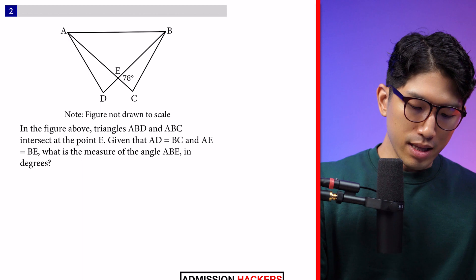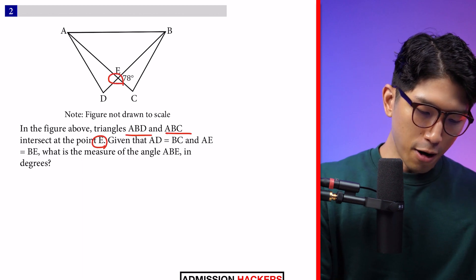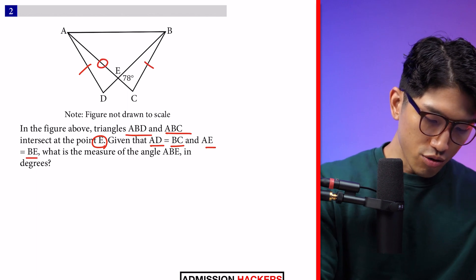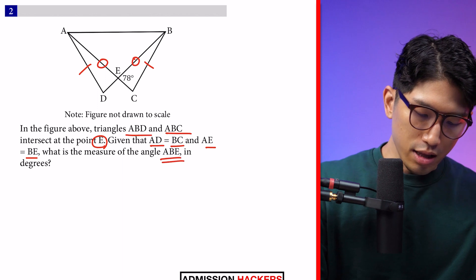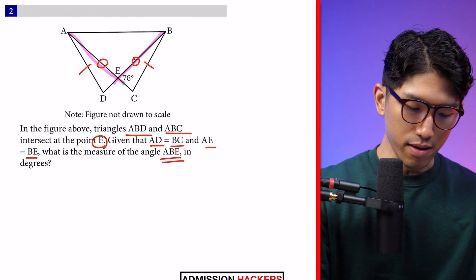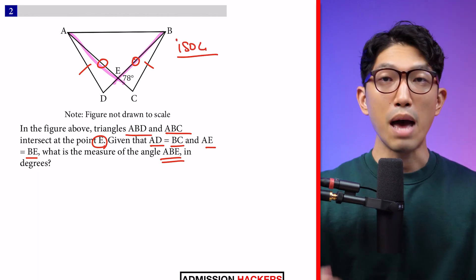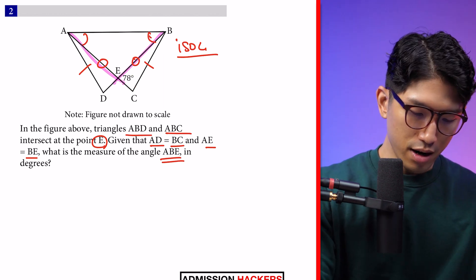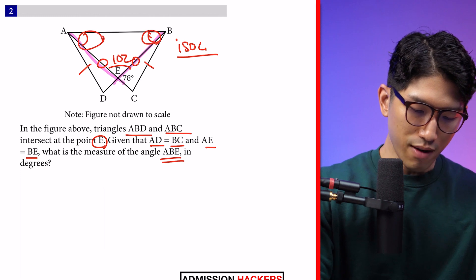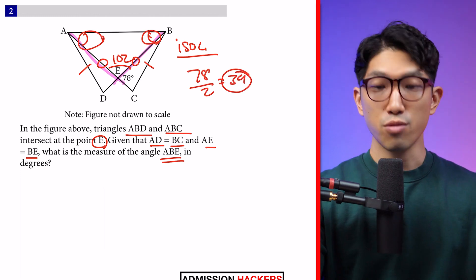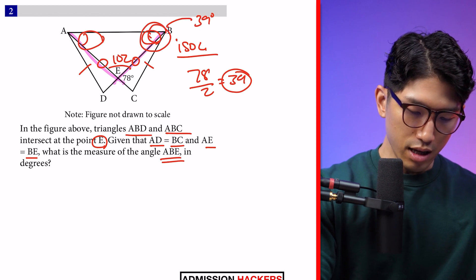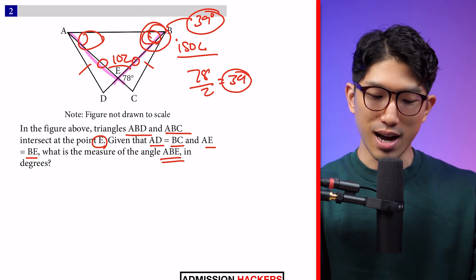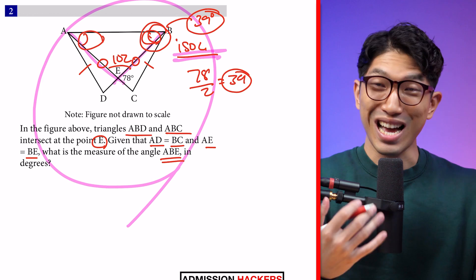Let's move on to the next one. The question says: In the figure above, triangles ABD and ABC intersect at point E. Given that AD equals BC and AE equals BE, what's the measure of angle ABE in degrees? If we're working with a triangle that has two equal side lengths, we call that an isosceles triangle. By definition, we know these two opposite angles are the same measure. Looking at the 78 there, it's going to be 102 there. These two are going to be 78 divided by 2 each, which is 39. So angle ABE is just 39 degrees. The main takeaway is there's a direct relationship between angle and the opposite side.